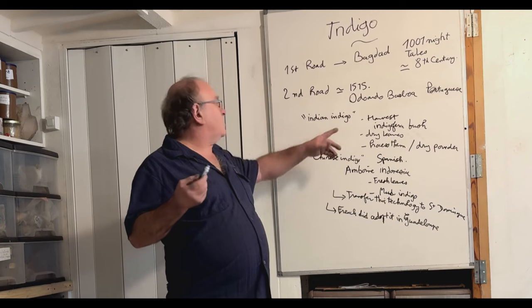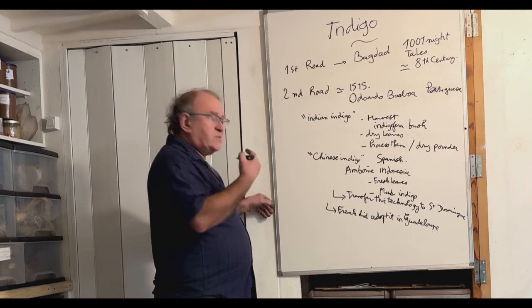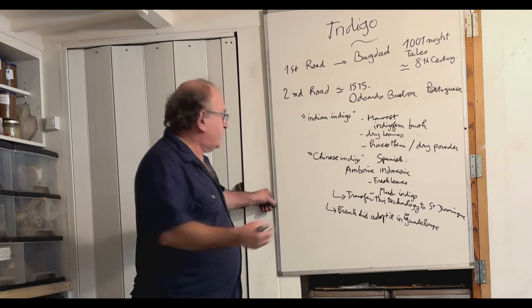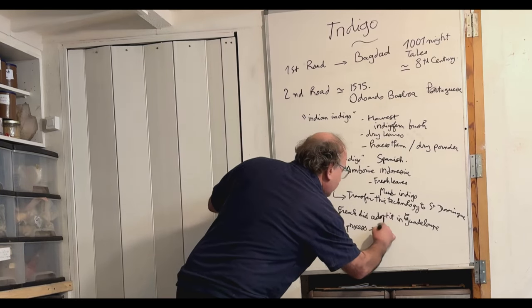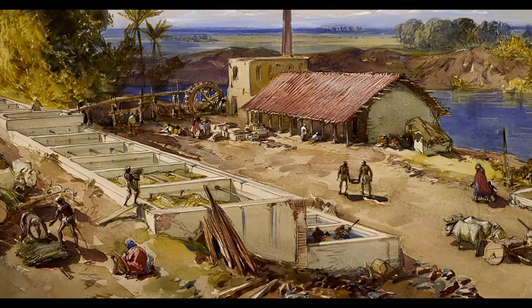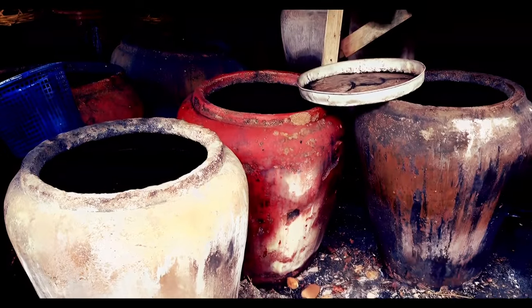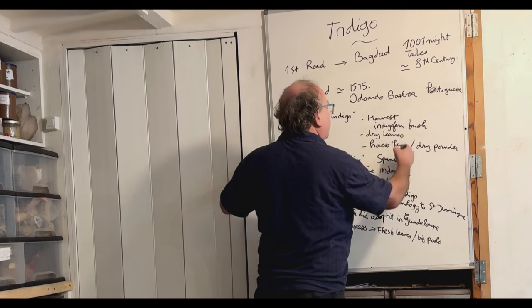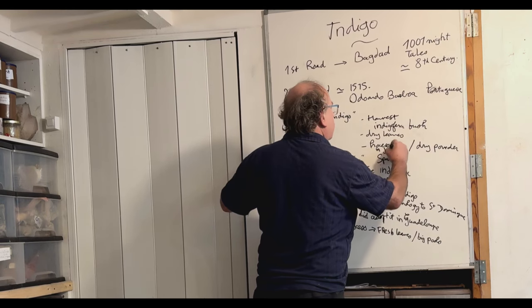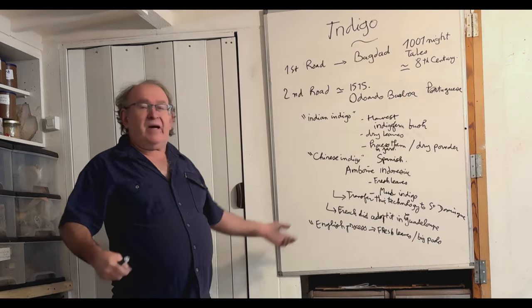But then it came back, a new process came, and I would say it is called, even today by Indian people, it is called the English process, which requires fresh leaves and big pools. That's interesting because this Indian indigo from dried leaves was made in jars. Dried leaves processed in jars. We have plenty of texts and explanations about that. So it came back to India.